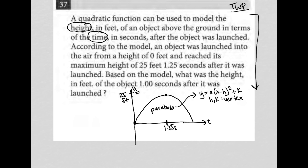Because we're dealing with h instead of y and t instead of x, I'm going to rewrite this as capital H for height equals a parentheses t for time instead of x minus h squared plus k.